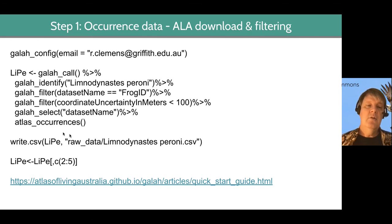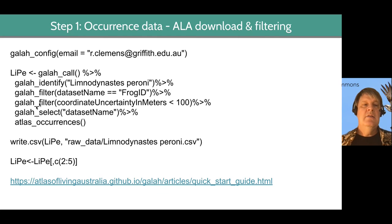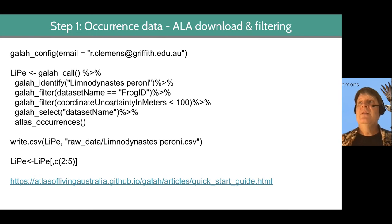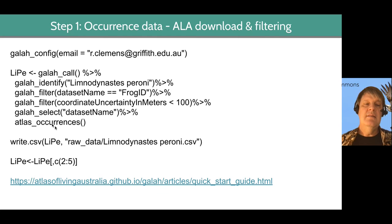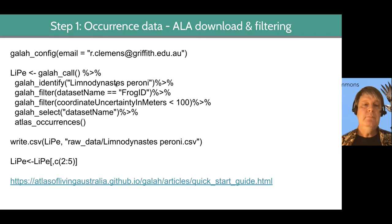Once that's done, this is the code that allows you to download and filter all the records you're interested in. The galah_call() function tells ALA you're interested in querying the ALA database. These pipe operators link the code, and the next line says: this is the species name that I'm interested in.